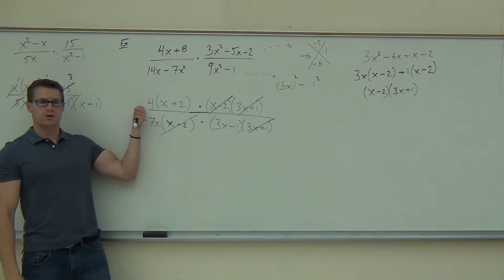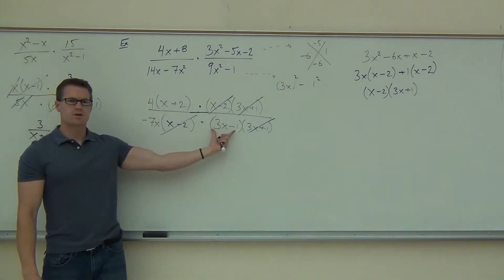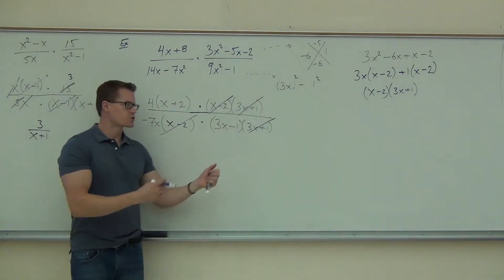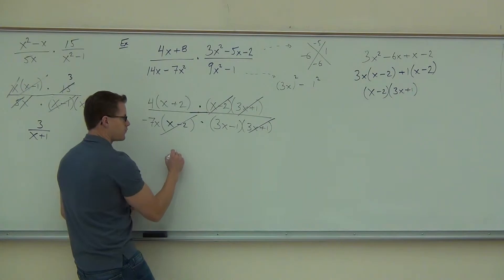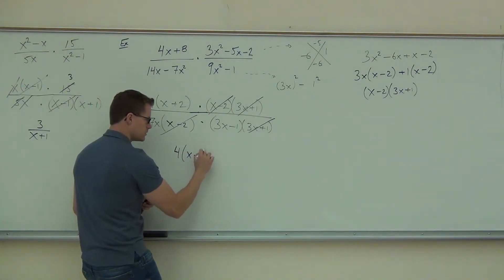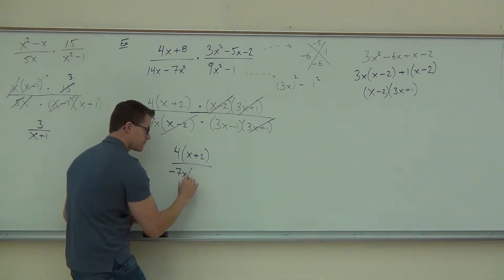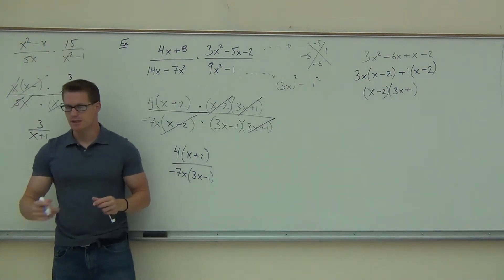How about the 4? 7? This x? These x's don't count? No. X plus 2? No. There's none of those. 3x minus 1 is nothing like that. So we're just going to write what's left over. We've got a 4 and an x plus 2. We've got a negative 7x. 3x minus 1. Don't distribute it. You just leave it. Just like that.